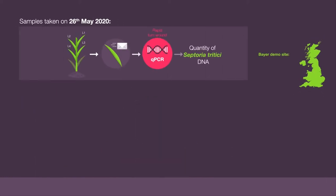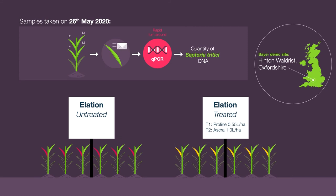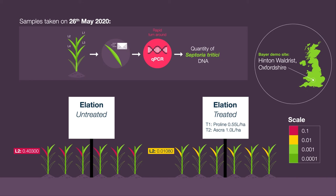For example, at our demonstration site at Hinton Waldrist in Oxfordshire, site manager Ben Giles compared an untreated crop of Elation to a treated crop which had 100g of tebiconazole at T0, 0.55 litres per hectare of Prolurel at T1, and 1.0 litres per hectare of Ascra at T2. Ben tested both the leaf 1s and leaf 2s on these two crops on the 26th of May. He received the results within a few days, and they showed that the untreated leaf 2s had over 30 times more septoria DNA present compared to the treated leaf 2s, despite the extremely dry spring weather in 2020. As we would expect, both of the leaf 1 results were very low. These results highlight the value of fungicides even when there has been relatively low spring rainfall, and show that the treated crops will be in a strong position to withstand septoria disease through the next few months until harvest.